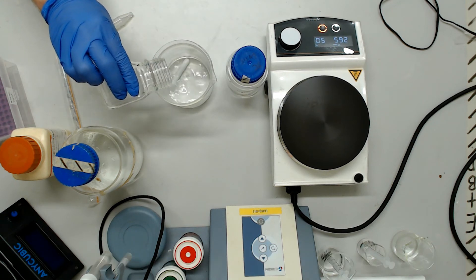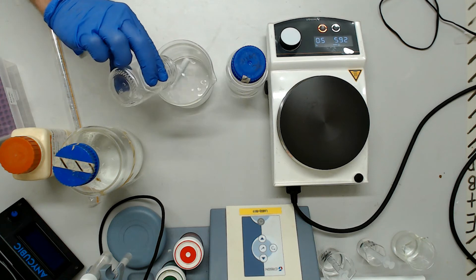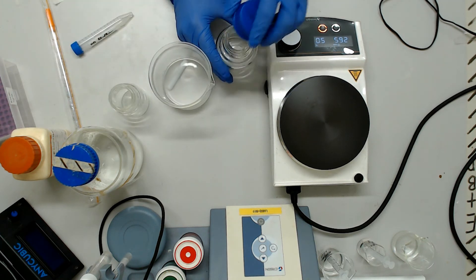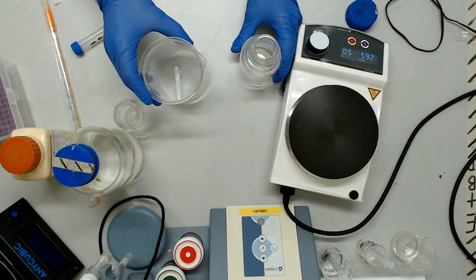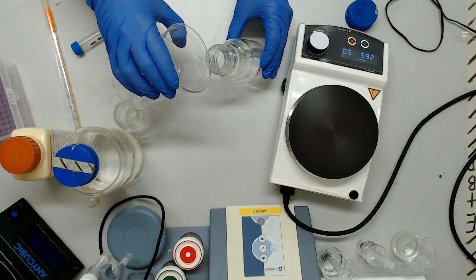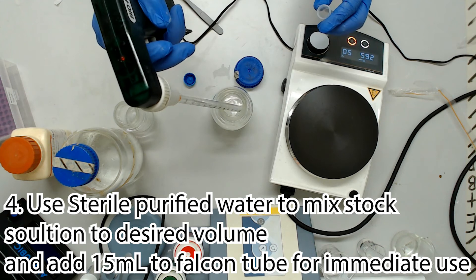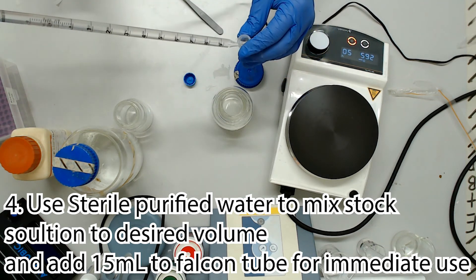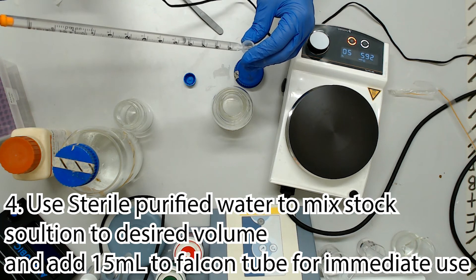I used to balance the pH of this buffer to 7.5, but word on the street is that this is an unnecessary or even unproductive step. I'll let you decide whether or not this is worthwhile, but skip it for mixing our own buffers for today. Finish by mixing your stock solution up to the final volume with sterile purified water, and don't forget to aliquot yourself 15 mils into a falcon tube for immediate use.